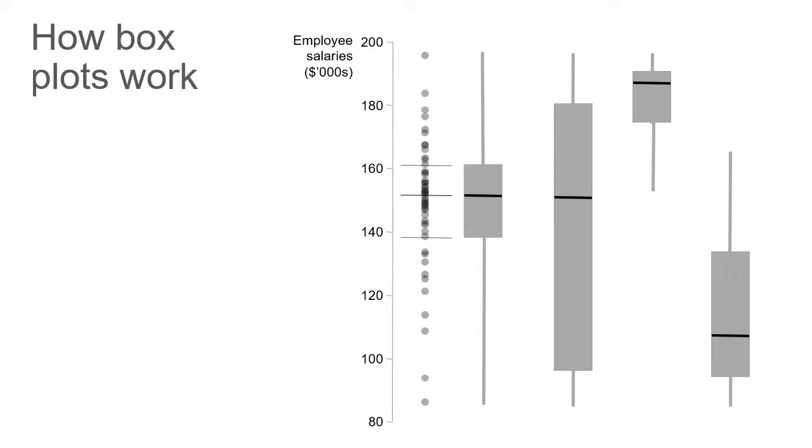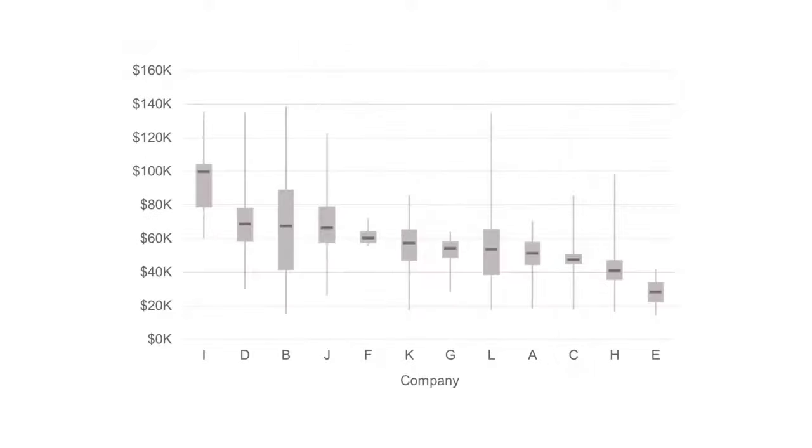I would never use a box plot to show just one distribution, though. Where they become really useful is when I want to compare multiple distributions, multiple sets of values. Coming back to our earlier example of companies, this would be what those values would look like as a box plot. Right away, I can see things like what the company with the highest median salary was, which companies had wide ranges of salaries, narrow ranges of salaries. Very good for comparing multiple distributions.